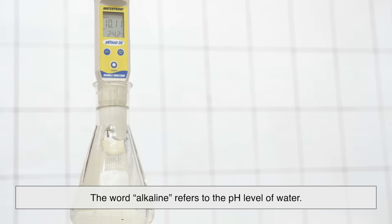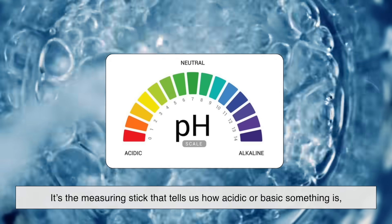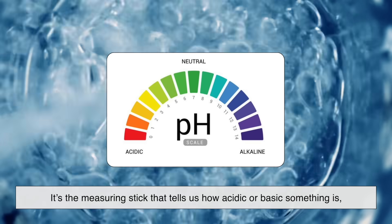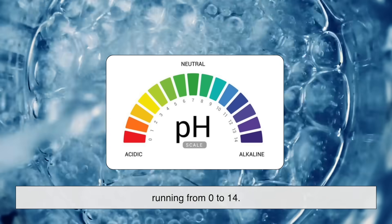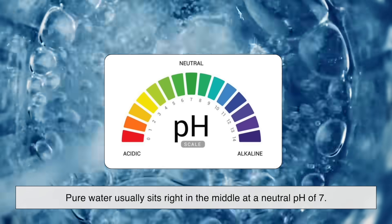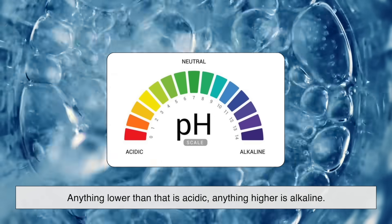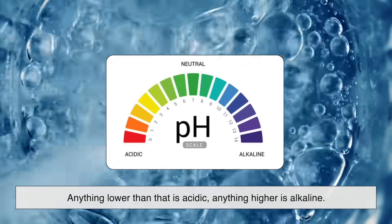Let's start with the basics. The word alkaline refers to the pH level of water. Remember the pH scale from school? It's the measuring stick that tells us how acidic or basic something is, running from 0 to 14. Pure water usually sits right in the middle at a neutral pH of 7. Anything lower than that is acidic. Anything higher is alkaline.